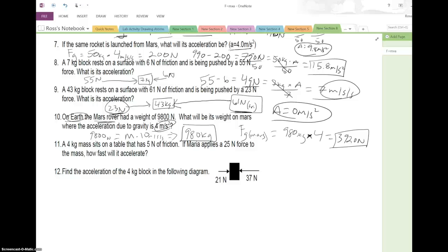Alright, we got cut off before I could finish the last two. So now we've got a 4 kilogram mass, so let's draw that, sitting on a table that has 5 newtons of friction. Maria applies a force of 25 newtons.